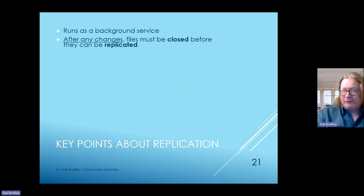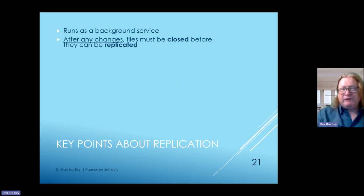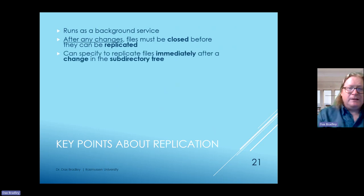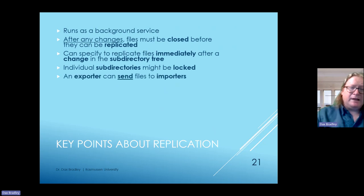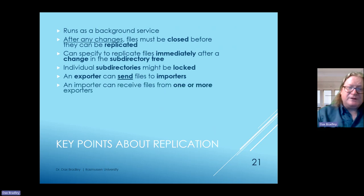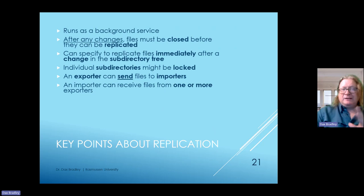Files must be closed before they can be replicated—you cannot replicate an active file, just like you can't move a Word file while it's open. Everything has to be saved and closed. You can specify replication immediately after a change in the subdirectory tree or on a regular basis. Individual subdirectories can be locked, requiring admin privileges. An exporter can send files to importers, and an importer can receive files from one or more exporters.